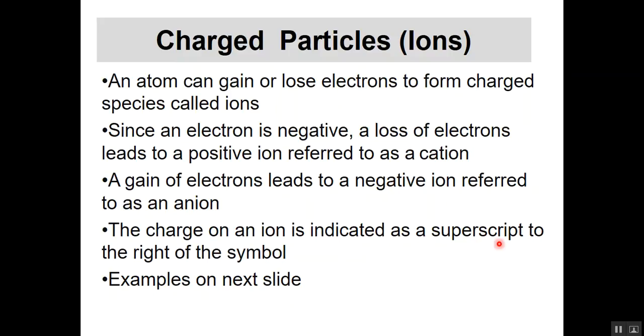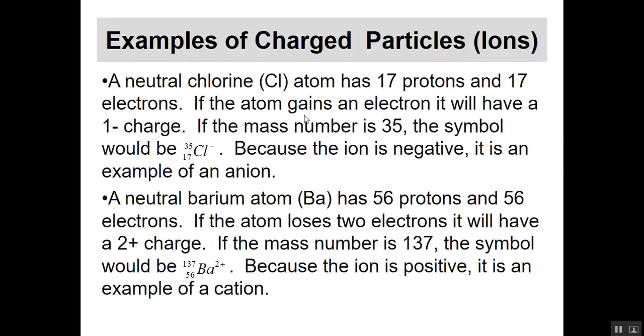We put a superscript to the right of the symbol to show the charge. For example, chlorine has 17 protons and 17 electrons as a neutral atom. But if chlorine gains an electron, it'll have an extra electron with a one minus charge. If the mass number is 35, the symbol would be 35 on top, 17 below, chlorine with a negative sign. This is an example of an anion.